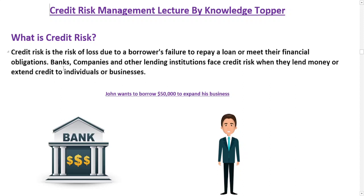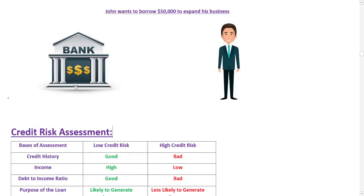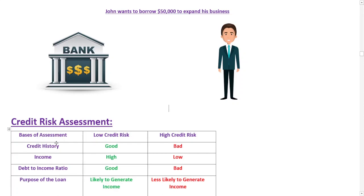Let's understand credit risk with the help of an example. Imagine that you are a banker and a small business owner named John comes to you to apply for a loan. John wants to borrow fifty thousand dollars to expand his business. As a banker, you will need to assess John's credit risk before approving his loan application, considering factors including his credit history, income, debt-to-income ratio, and the purpose of the loan.